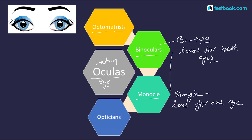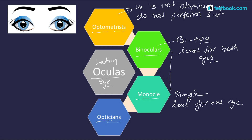We have optometrist and optician — two different words we often confuse. An optometrist is not a physician and does not perform surgery. Optometrist: metrist means 'one who measures,' and opto relates to oculus meaning eye. So an optometrist measures vision, tests for glaucoma, and prescribes and fits glasses.